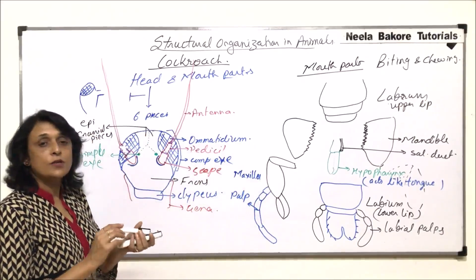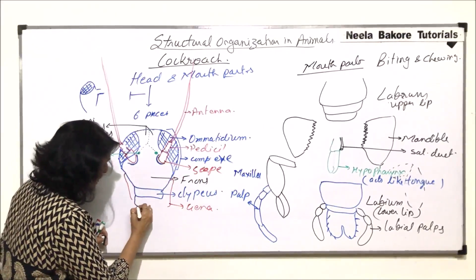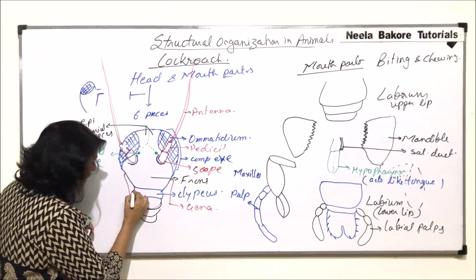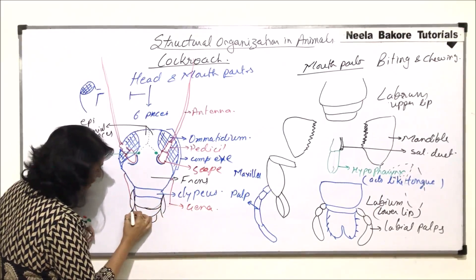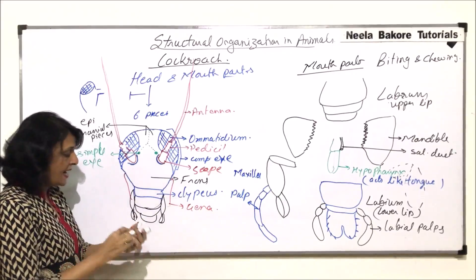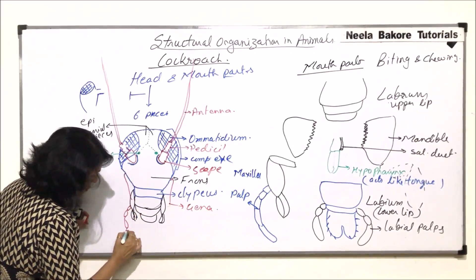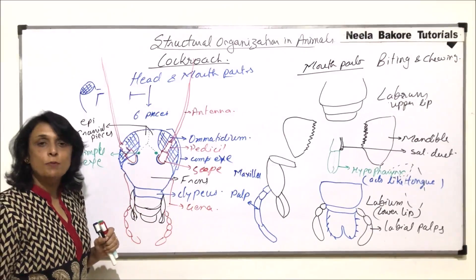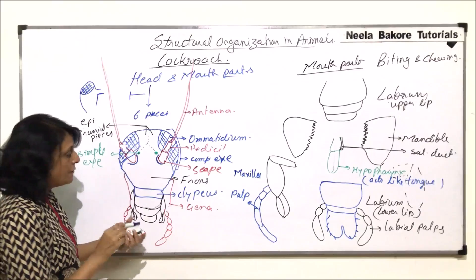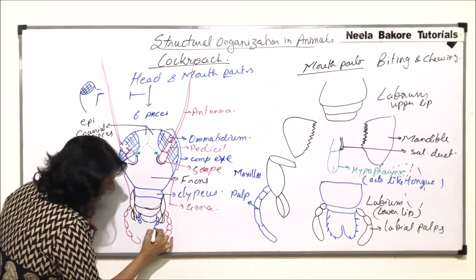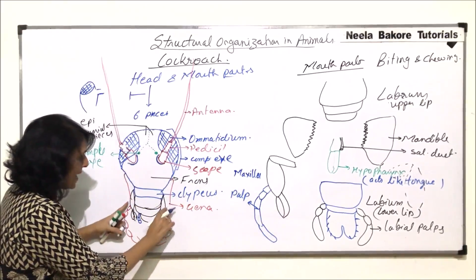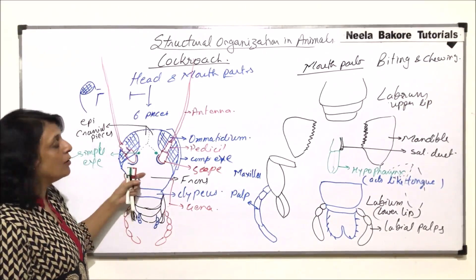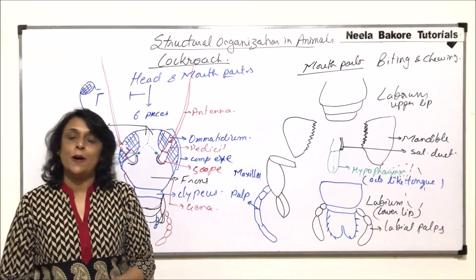Looking at the cockroach head from the front, what is visible? Only the upper lip is visible at the top. From the sides, the maxilla parts are visible, and extending from them, the five-segmented maxillary palps are also seen. The lower lip and mandibles are not visible from the front. However, the labial palps can be seen extending from behind. These are the biting and chewing type of mouth parts in case of cockroach.